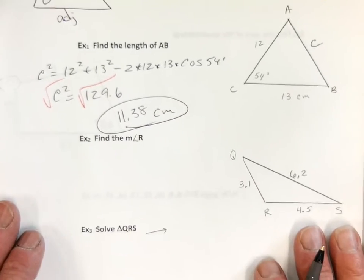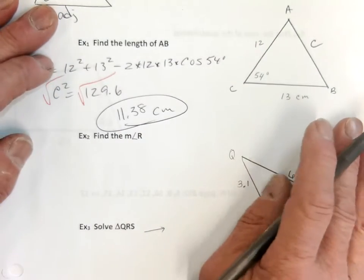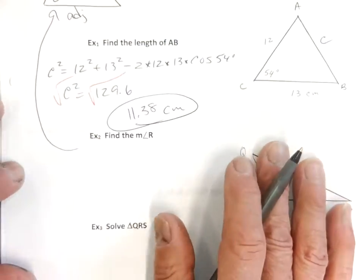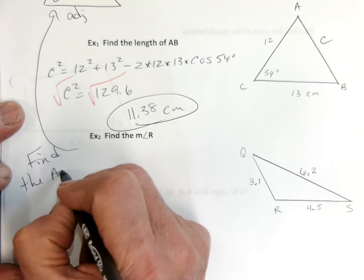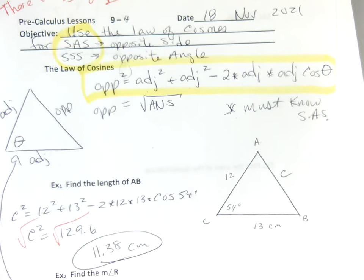Okay, now find the measure of angle R. So there's a second formula we're going to write. To find an angle, we'll go back to the original formula and just rewrite it. I'm going to bring the C squared over and divide by the negative 2 adjacent times adjacent, so I'll have a cosine by itself. You get the same formula but in terms of the angle. So it looks like this — cosine of theta equals... and you really have to be careful with parentheses here. Where's my big dark pen? You have to have the parentheses in your calculator or it's not going to work.